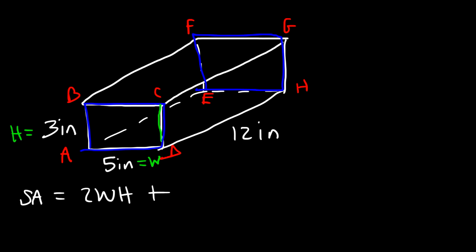And then we have the face on the right, let's say CDHG, and then the one on the left ABFE. So those two faces have a length L and also a height H, so the area is going to be 2LH. And then we have the face on the bottom ADHE and also the one on top BCGF. So they have a length L and a width W, so it's going to be L times W, but 2LW.